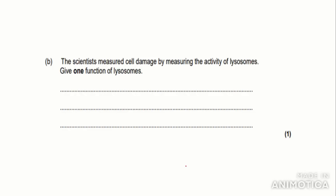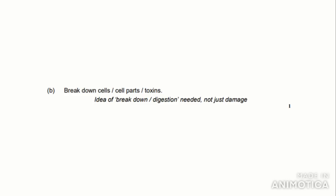The next question: a scientist measures cell damage by measuring the activity of lysosomes. Give one function of lysosomes — it is a one mark question, so just state it, no explanation needed. My answer: breaks down unwanted cells. Checking the mark scheme: breaks down cells, or breaks down cell parts, or breaks down toxins — any of these is acceptable. The mark scheme notes you need the idea of breakdown or digestion, not just damage, so you won't get the mark if you only write 'damages cells'.